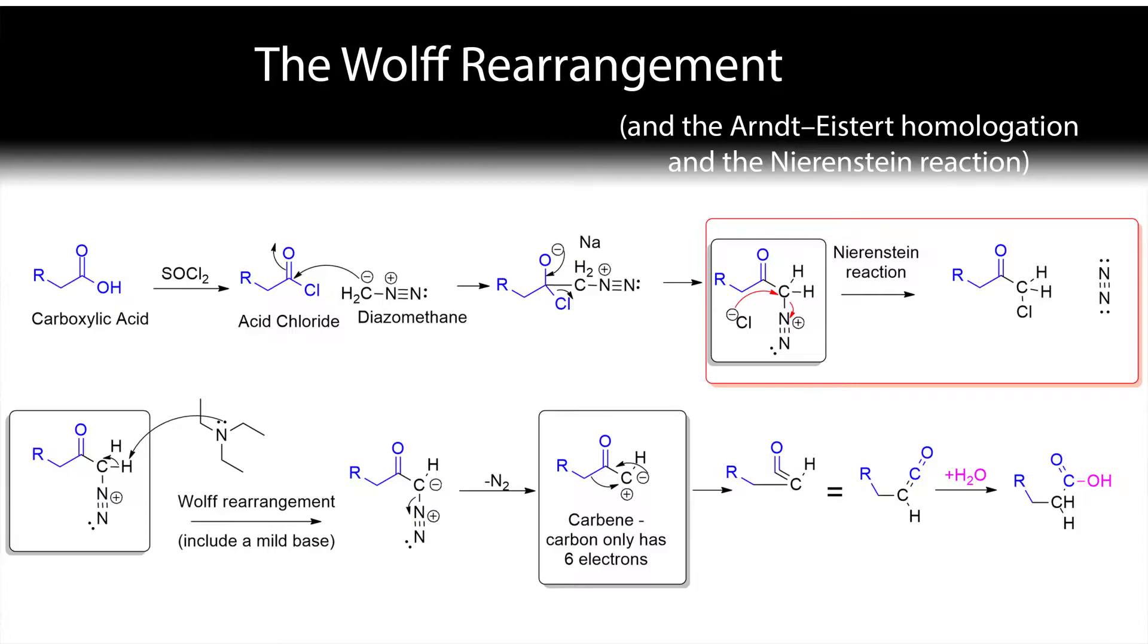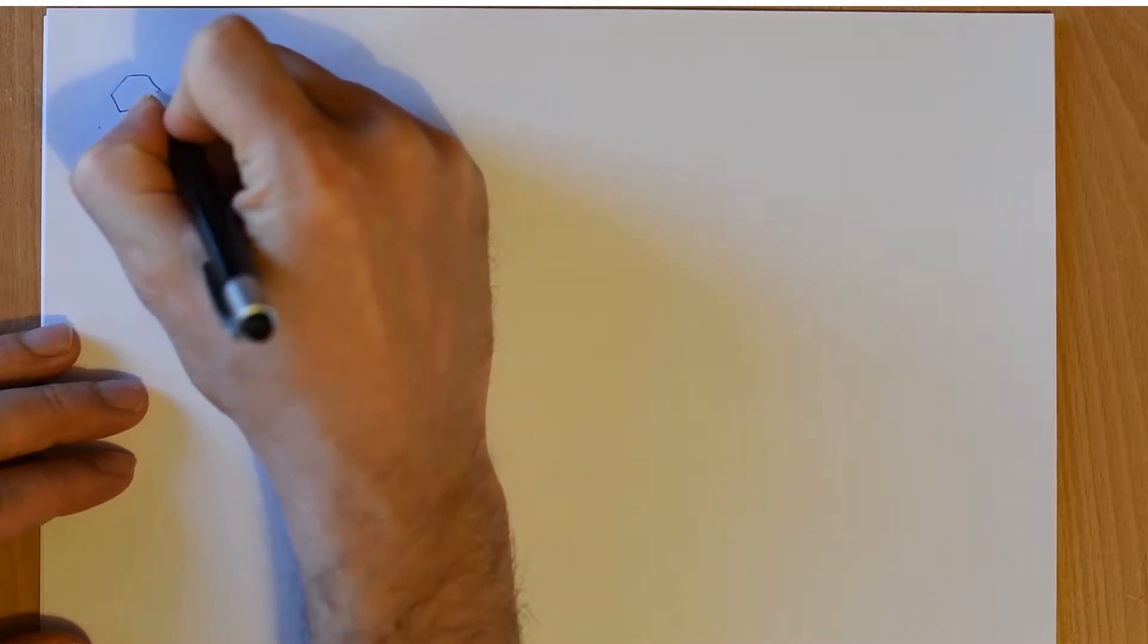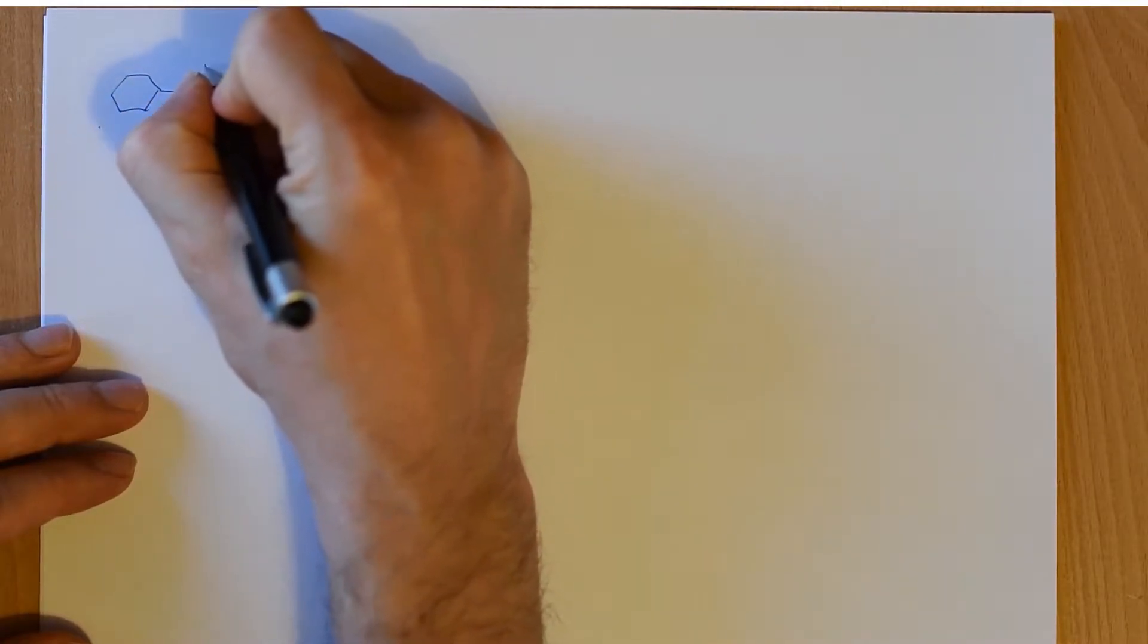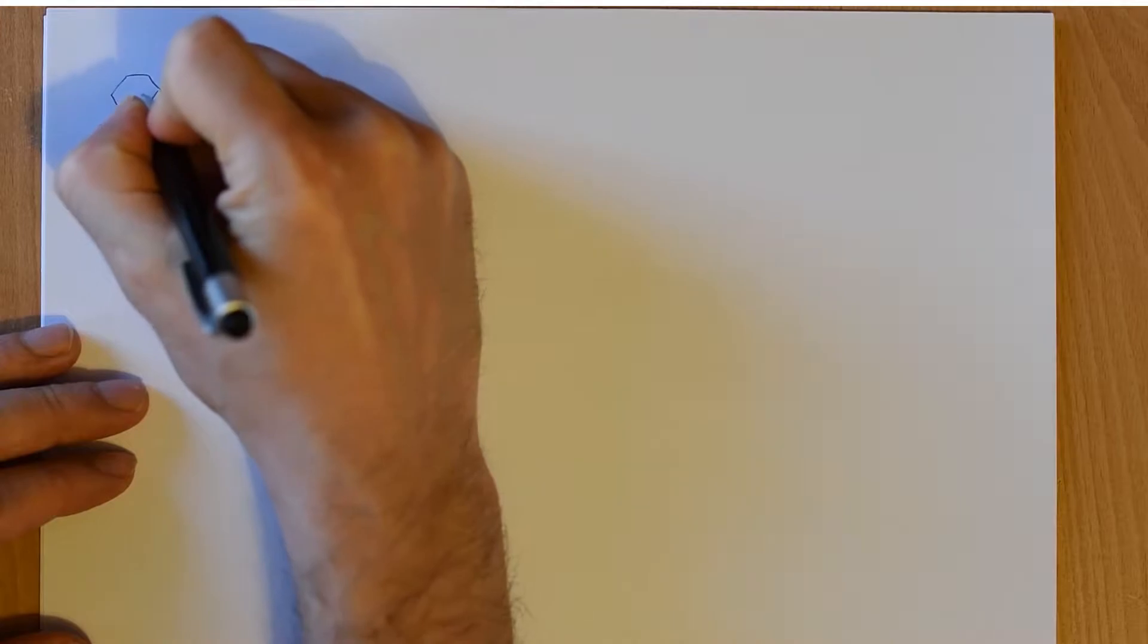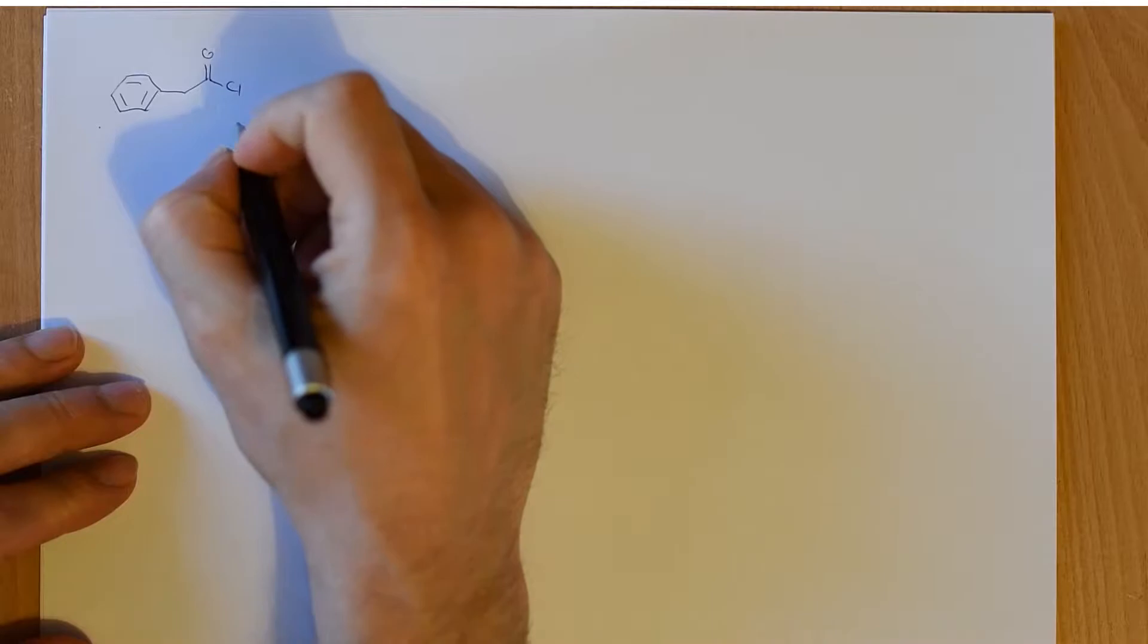So let's look at this reaction, and I'm going to do the reaction with phenylacetic acid chloride. So this molecule here, and we're going to treat it with diazomethane.